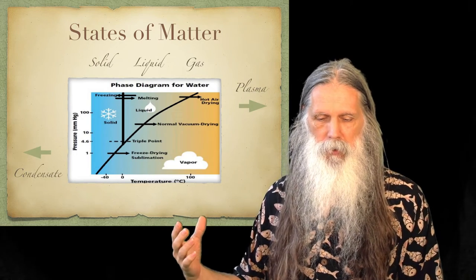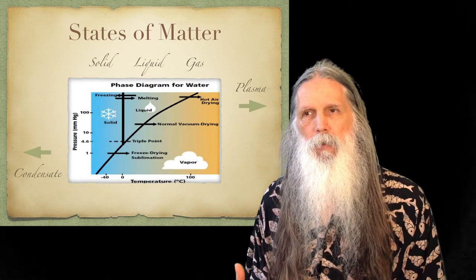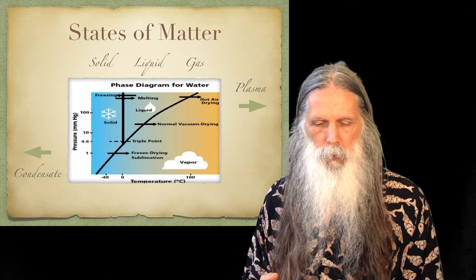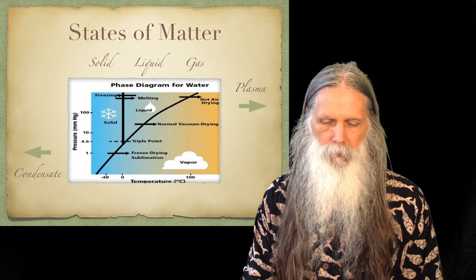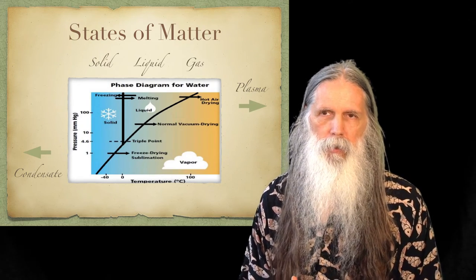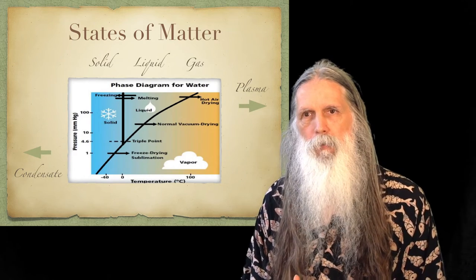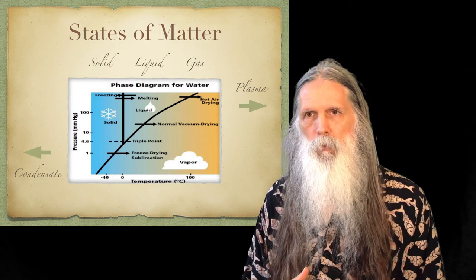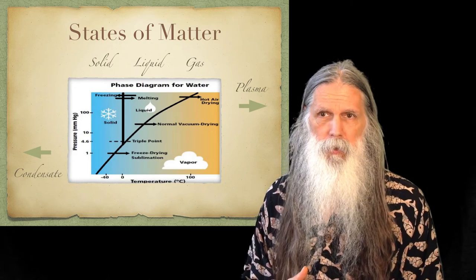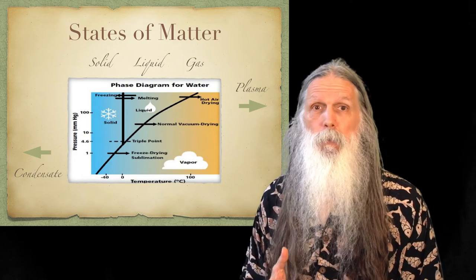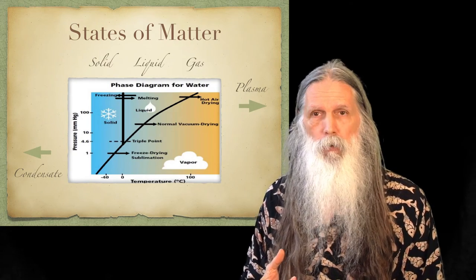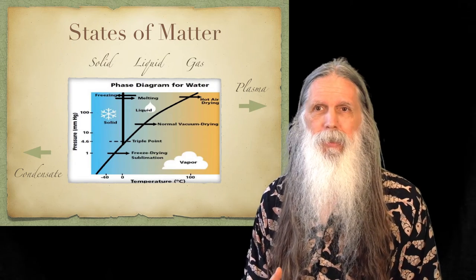The Bose-Einstein condensate is an example of this state. Bose-Einstein condensates were awarded the Nobel Prize in physics in 2001 for research from the 1990s. Since then, for example in 2010, it was shown that photons — light itself — can also form a condensate. In fact, when light forms a condensate, it has mass.